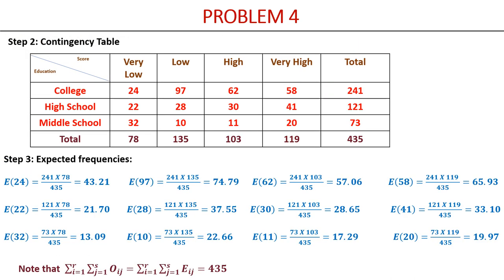We compute the row totals, column totals, and verify N = 435. Since we have three rows and four columns, there are 12 expected frequencies to calculate. Each is found using (row total × column total) / N. The sum of all 12 expected frequencies is confirmed to equal exactly 435, after which observed and expected frequencies are ready for the final test calculation.